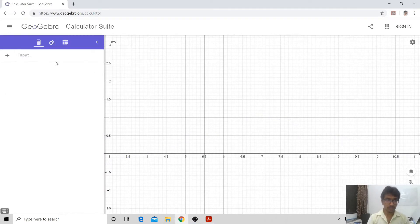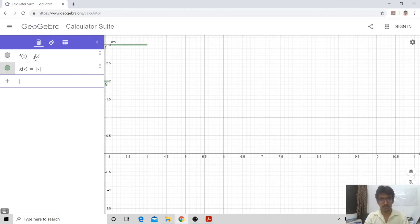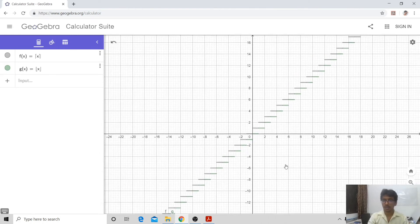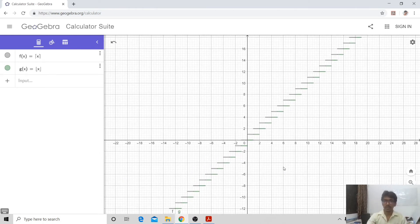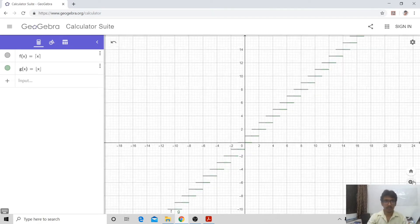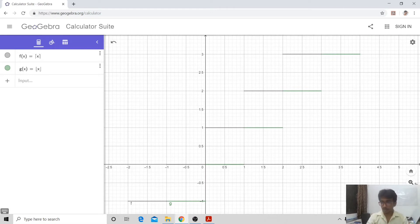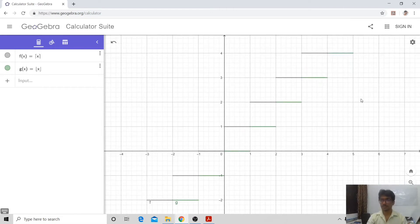Let me delete it and define my f(x) to be my ceiling function of x and my g(x) to be the floor function of x. Let me zoom out so that you can see the things clearly. Here you may see there are green lines and gray lines. Gray lines represent the ceiling function and green lines represent the floor function.